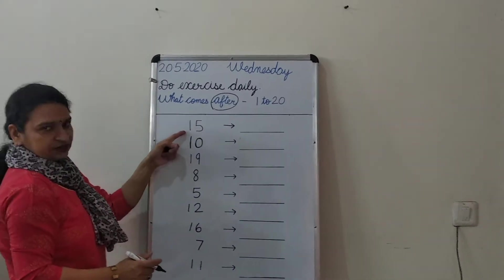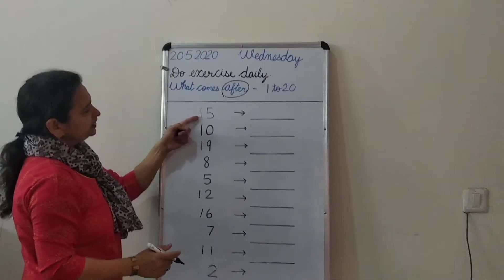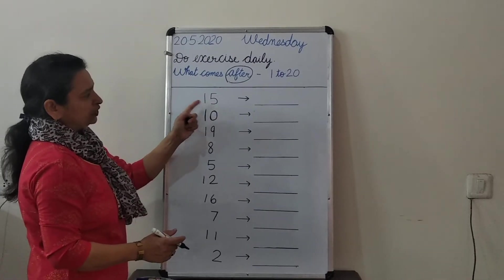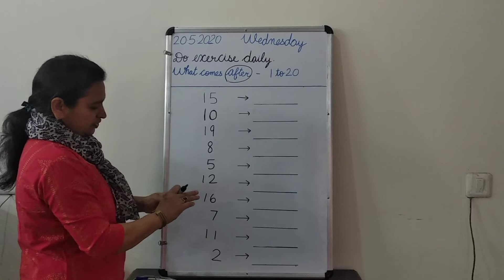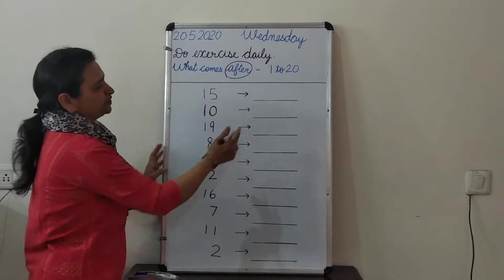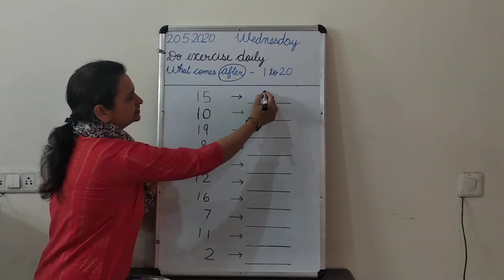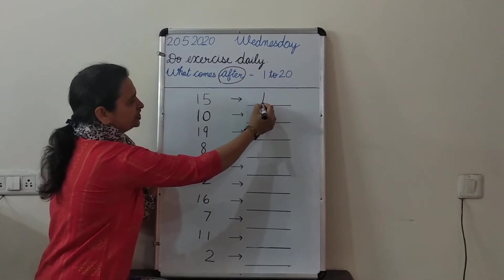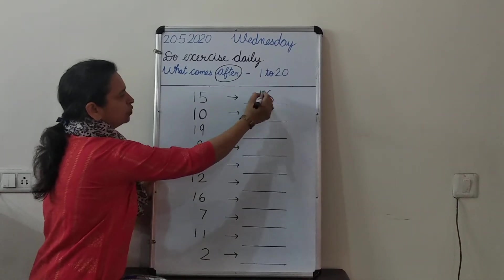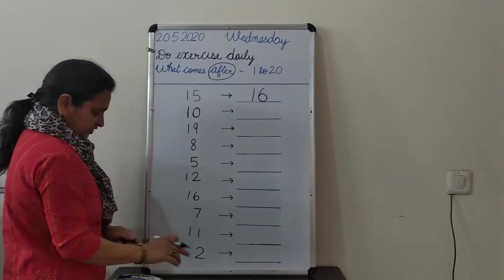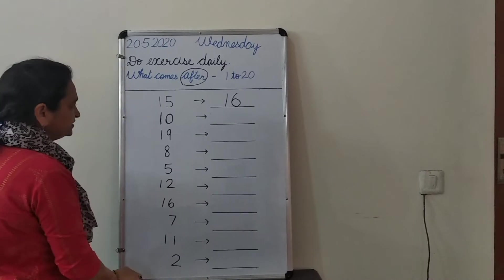Now we start revision. Read the number 50. What comes after 50? Speak out. What comes after number 50? 60. Yes, you are right. What comes after 50? 16.